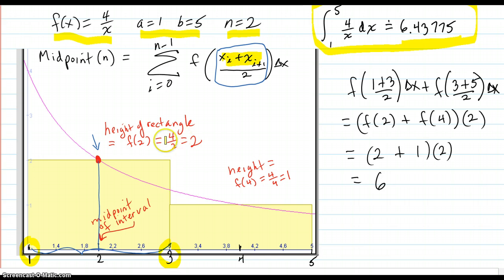So in that case it would be 1 plus 3 is 4 divided by 2 is 2. That would be your midpoint of that first sub-interval. And your height would be f of 2, which would come out to 2.